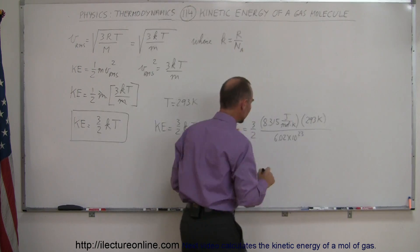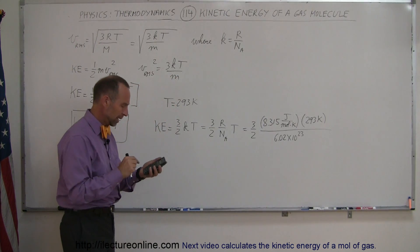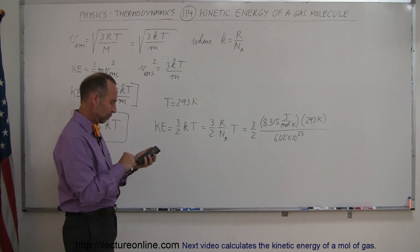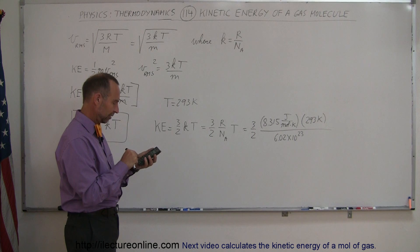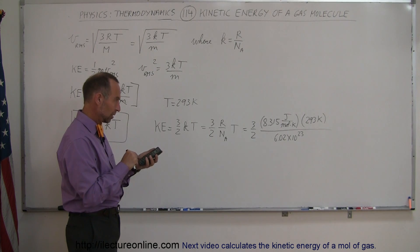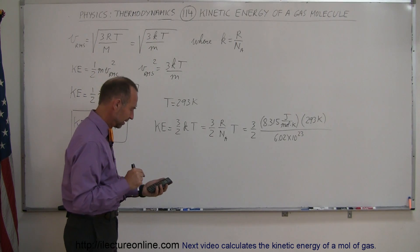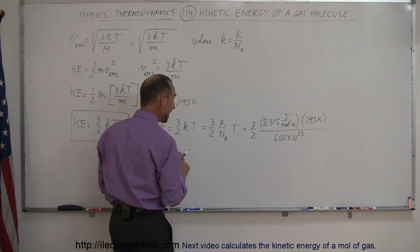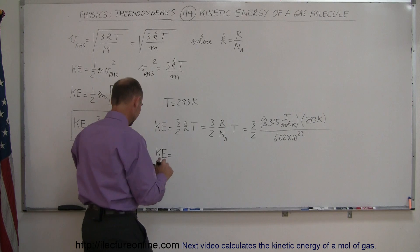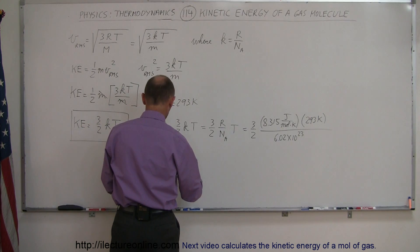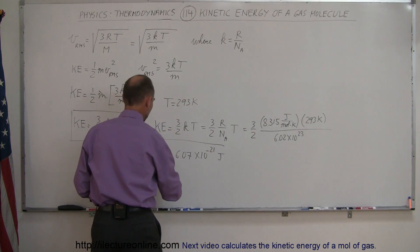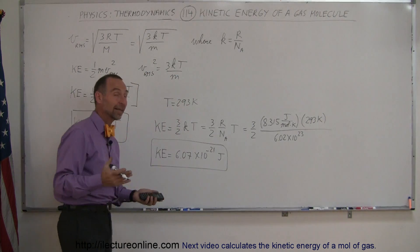So let's see what we get here. So 3 half is 1.5 times 8.315 times 293 divided by 6.02 e to the 23rd equals, and the kinetic energy at room temperature of any molecule in the air is equal to 6.07 times 10 to the minus 21 joules. Of course kinetic energies are in terms of joules.